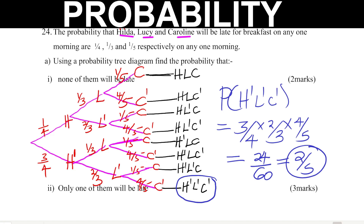Part 2: the probability that only one of them will be late. We are looking for instances where only one person is late and the other two are not. The three instances are: Hilda is late (H, L prime, C prime); Lucy is late (H prime, L, C prime); and Caroline is late (H prime, L prime, C).